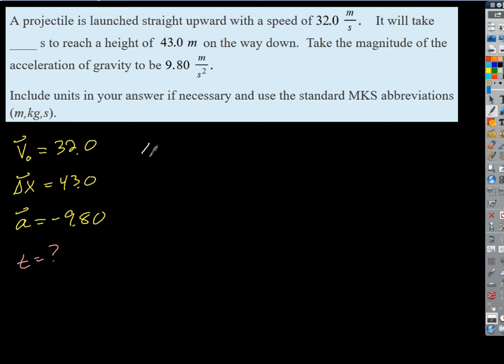Okay, so we'll say delta x equals v naught t plus one half a t squared. And if we plug in our stuff here, we get 43.0 equals 32.0 t minus one half times negative 9.8 is just negative 4.9, right? So we'll just consolidate all that stuff into one number, t squared.